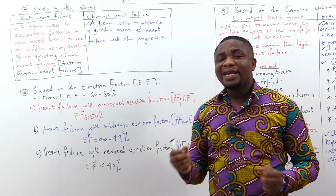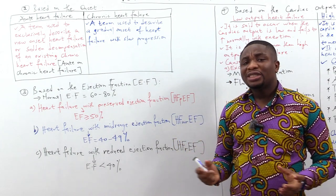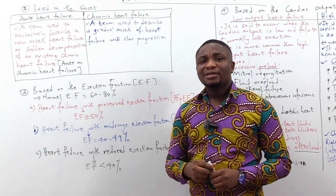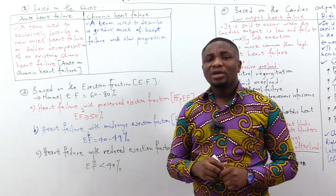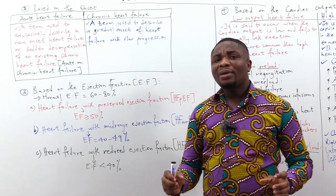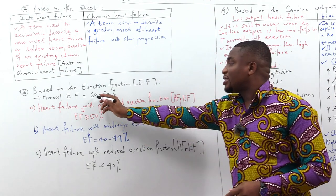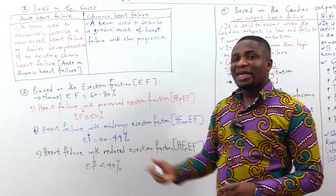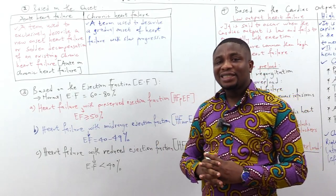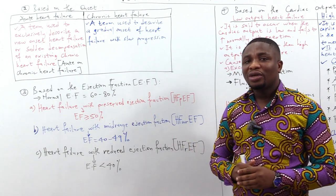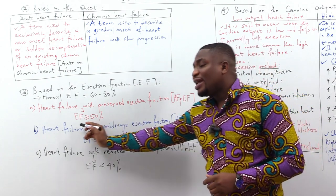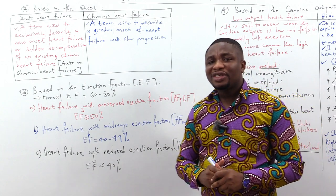The next classification is based on ejection fraction — the fraction of blood ejected from the left ventricle relative to the total amount of blood in the left ventricle at end diastole. The normal ejection fraction is 60–80%. Based on this, the first type is heart failure with preserved ejection fraction, which we related to diastolic heart failure, with an ejection fraction greater than or equal to 50%.